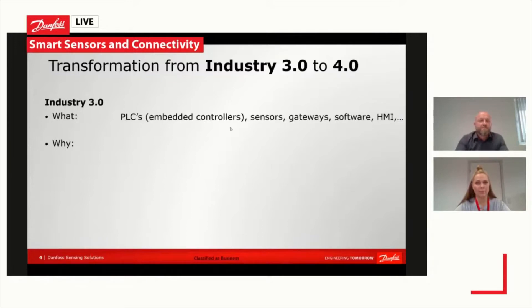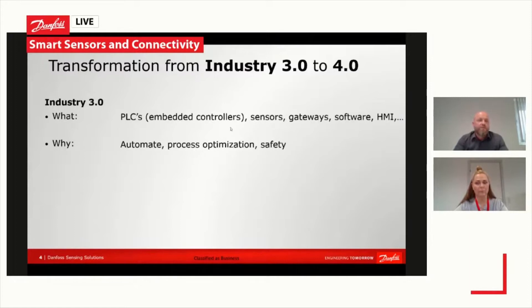But why did we introduce all of this? The answer is: to control things, and more specifically, to automate things — to get rid of many manual processes that are hard to control and optimize. Process optimization was really one of the key drivers of embedding controls in applications. And then also safety, of course — going for an automated solution on the control side also leads to new ways to ensure a safe environment around whatever application you are controlling.